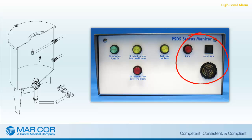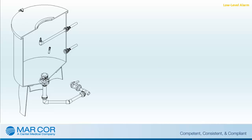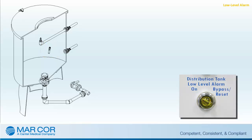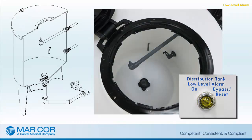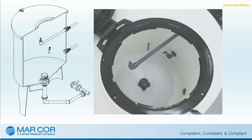Pressing the alarm mute switch on the PSDS status monitor will silence the audible alarm. A distribution tank low-level alarm condition is created when the solution level in the distribution tank drops and activates the low-level float switch. The distribution tank low-level alarm hand switch must be in the on position and the distribution tank low-level float switch not satisfied to activate the alarm. The low-level condition is typically observed when the solution level in the distribution tank falls during use at the end of a treatment day or prior to the initial daily batch transfer from the mix tank. This alarm sounds when there is approximately 20 gallons of solution left in the distribution tank.